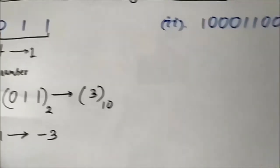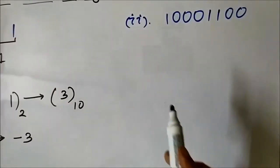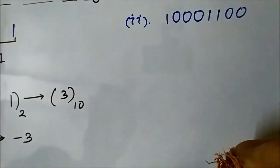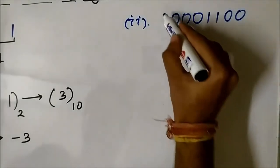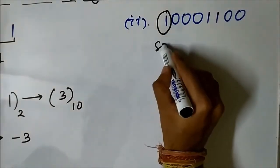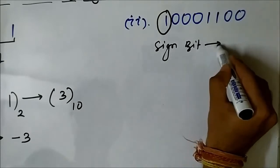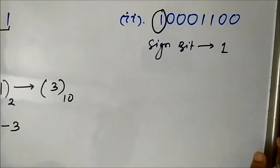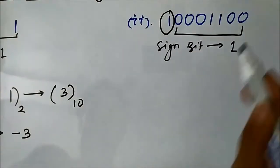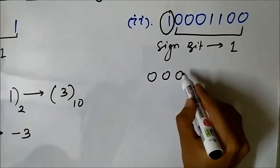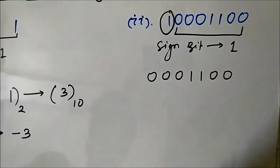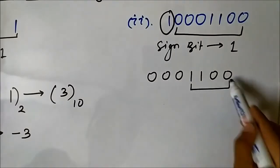Let us take another example. Here a number is given: 1 0 0 0 0 1 1 0 0. The first step is again the examination of the sign bit — the leftmost bit, the MSB. Here also it is 1, so the sign bit is 1, meaning here also the number is negative. The remaining magnitude bits are 0 0 0 1 1 0 0. We know that zeros on the left-hand side have no value, so we can ignore them and only consider 1 1 0 0.